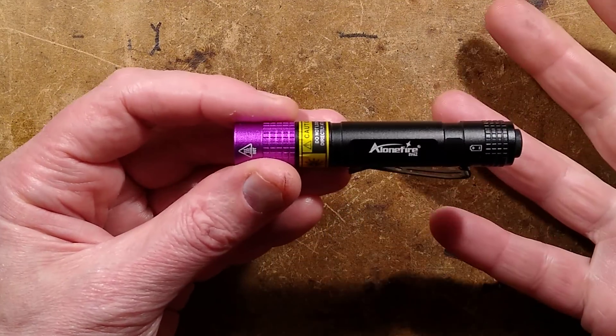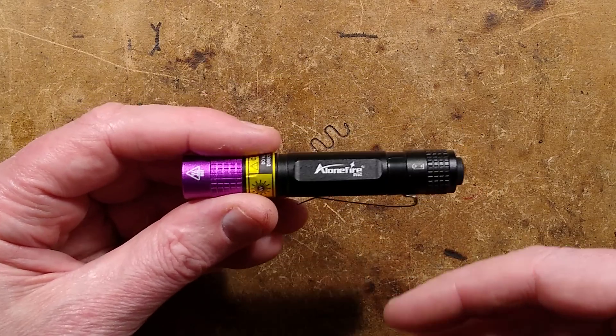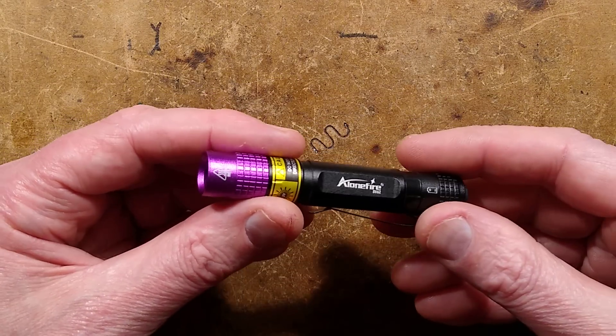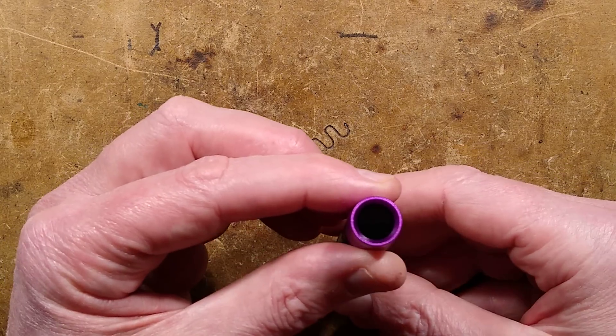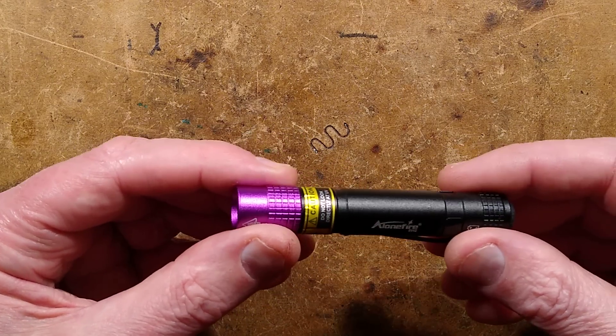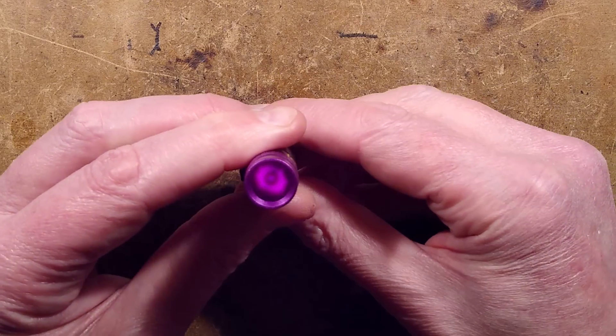It's a 365 nanometer flashlight. I was thinking it's going to be one of those near ultraviolet ones, but when it arrived, I was quite surprised. I stuck the AAA cell in and it is actually a real deep ultraviolet light.